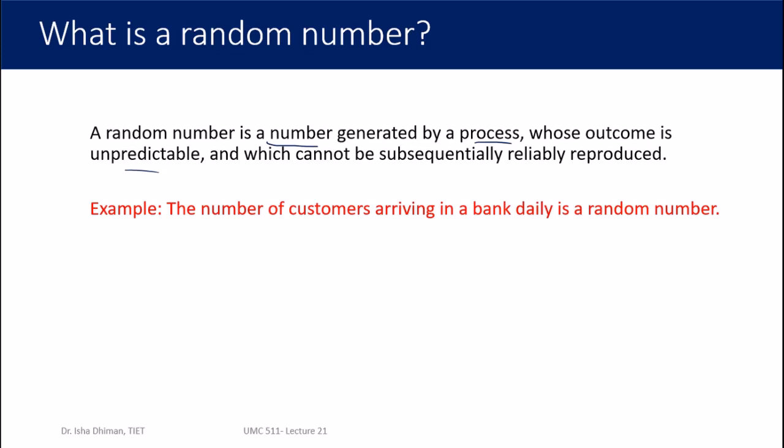First, it's a number — it can be an integer, a whole number, a rational or irrational number, a fraction — but it is ultimately a mathematical number. It is generated by a process, and the outcome of that process is unpredictable. Recalling the classification of mathematical models, there are deterministic and stochastic processes. Processes whose outcomes are unpredictable are stochastic processes.